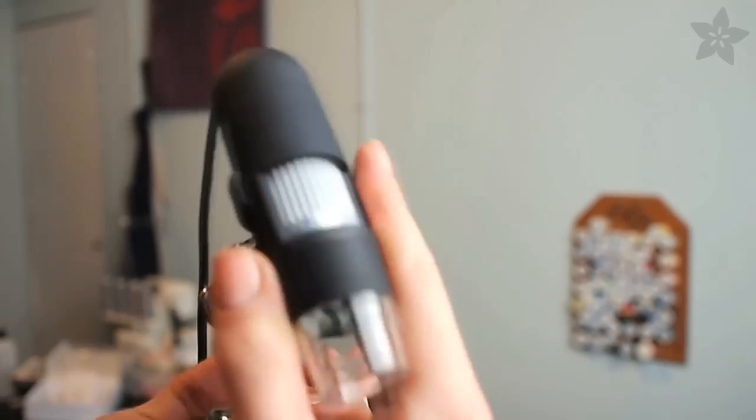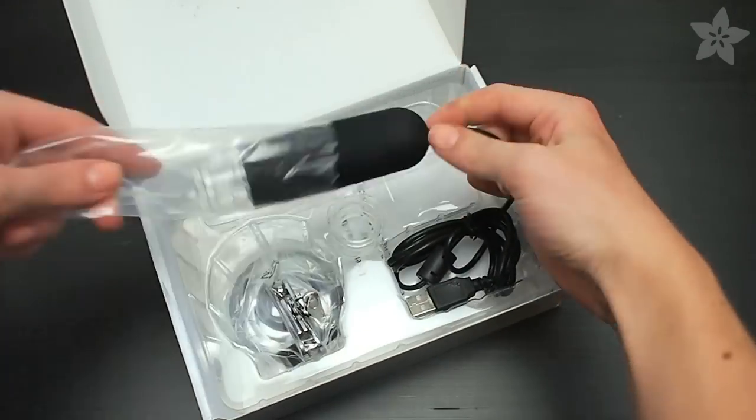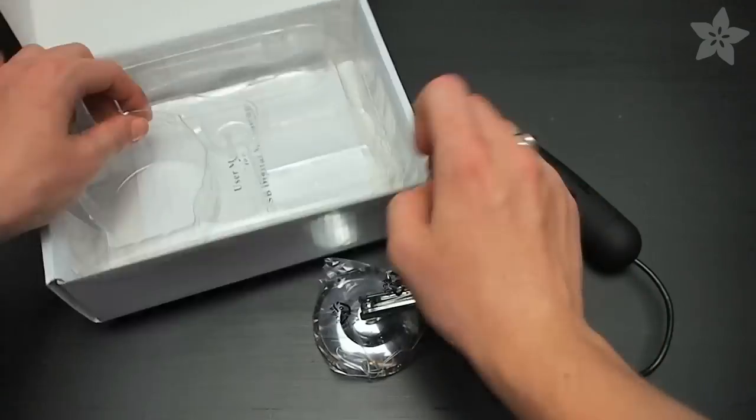This is the USB microscope from Adafruit. Inside the box you'll find the main microscope body with one diffuser and a lens cap, an additional diffuser,